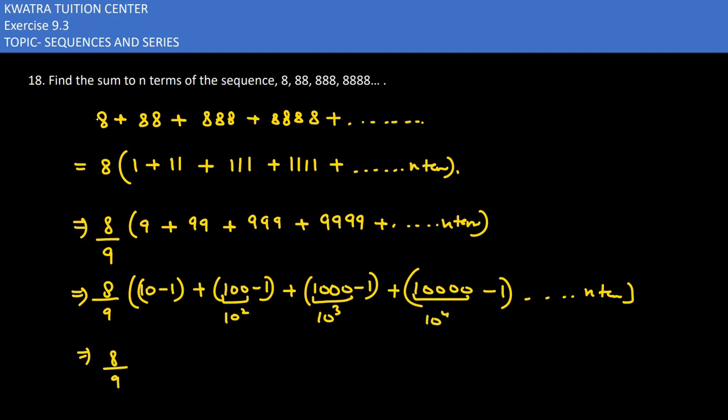So we have 8 by 9. Now what we have left in brackets: 10 squared, 10 cubed, 10 to the power 4, and so on. One part is this.